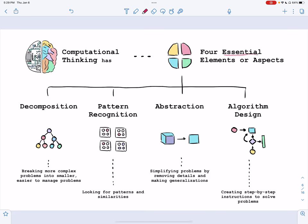Computational thinking has four essential elements or aspects. Decomposition, which is really about breaking more complex problems into smaller, easier-to-manage problems. Pattern recognition, which is really about looking for patterns and similarities.